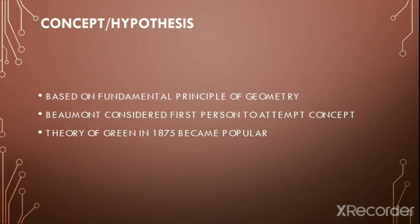Let's look into the concept behind this theory. The tetrahedral hypothesis is based on the fundamental principles of geometry. L.E. Beaumont is considered to be the first person who attempted this concept. However, the theory of Lothian Green in 1875 became popular and significant as it is based on geometric principles.